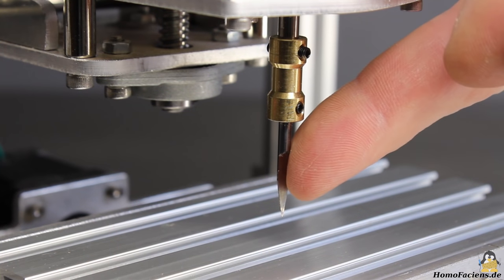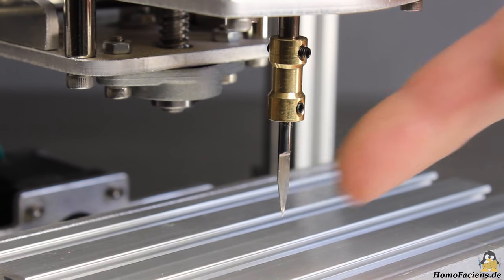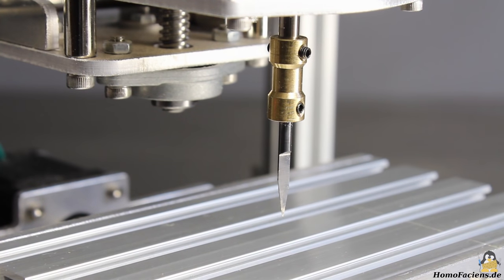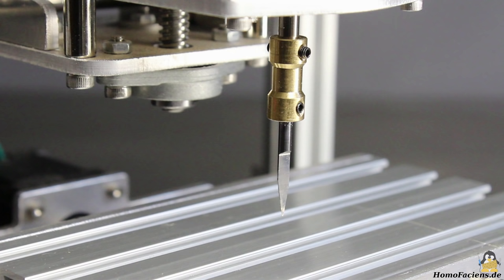The frame of the machine isn't very solid, you can easily deflect the V-bit noticeably with your finger. That's the reason why this machine is sold as engraving machine rather than calling it CNC router.